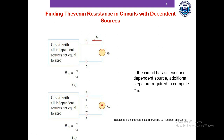Instead, we turn off the independent sources and connect a known voltage source or a known current source at terminals A and B. If we connect a known voltage source — let's say a 1V voltage source — we try to compute the current coming out of its positive terminal. You can use any analysis you want: nodal analysis, mesh analysis, KVL, KCL, voltage divider, current divider. Once you compute I0, and you already know V0 because it's a known source set to 1V, you take the ratio of voltage and current — that is your Thevenin resistance.